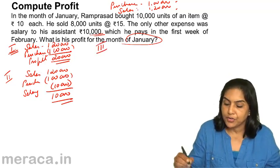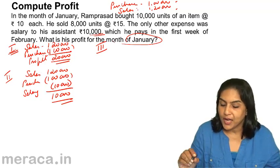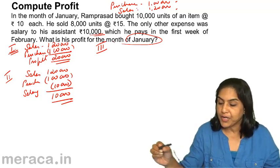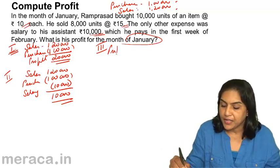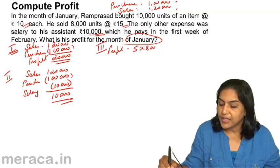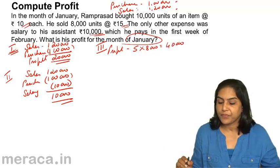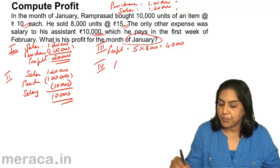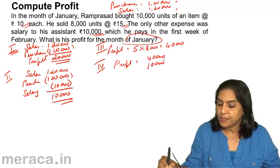A third scenario: profit is simply rupees 5 per unit (15 minus 10) into 8,000 units — therefore 40,000. A fourth accountant says: profit is 40,000 less the 10,000 expense, therefore profit is 30,000.